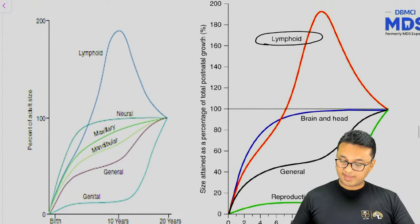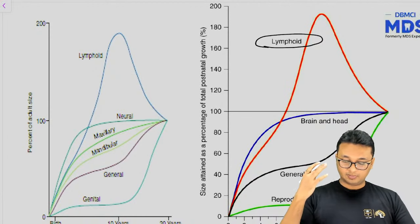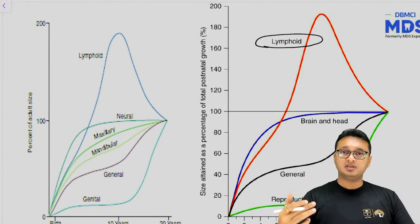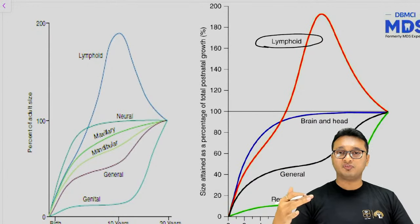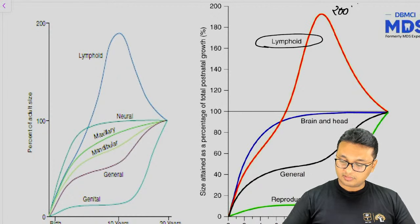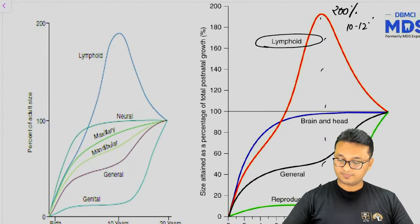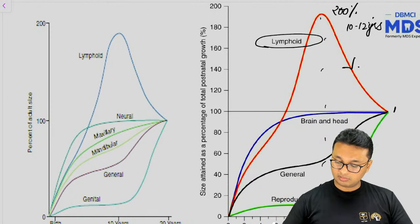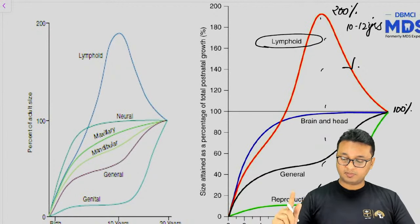The lymphoid system is responsible for maintaining immunity. Children frequently put things in their mouths, so nature provides a protective mechanism — the lymphoid system grows up to 200% of adult size by around 10 to 12 years of age. Later, the hypertrophic lymphoid system involutes back to 100% by the end of puberty.